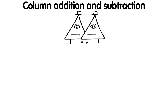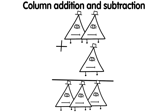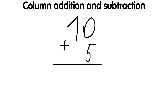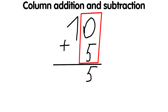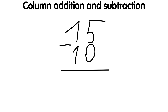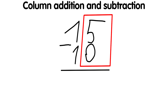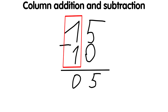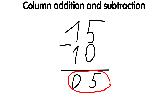Column addition and subtraction are methods used to perform addition and subtraction of large numbers. For example, 10 plus 5: write in column and count the columns separately. 5 plus 0 equals 5, 1 plus 0 equals 1, we get 15. For 15 minus 10: 5 minus 0 equals 5, 1 minus 1 equals 0, and we get 5.